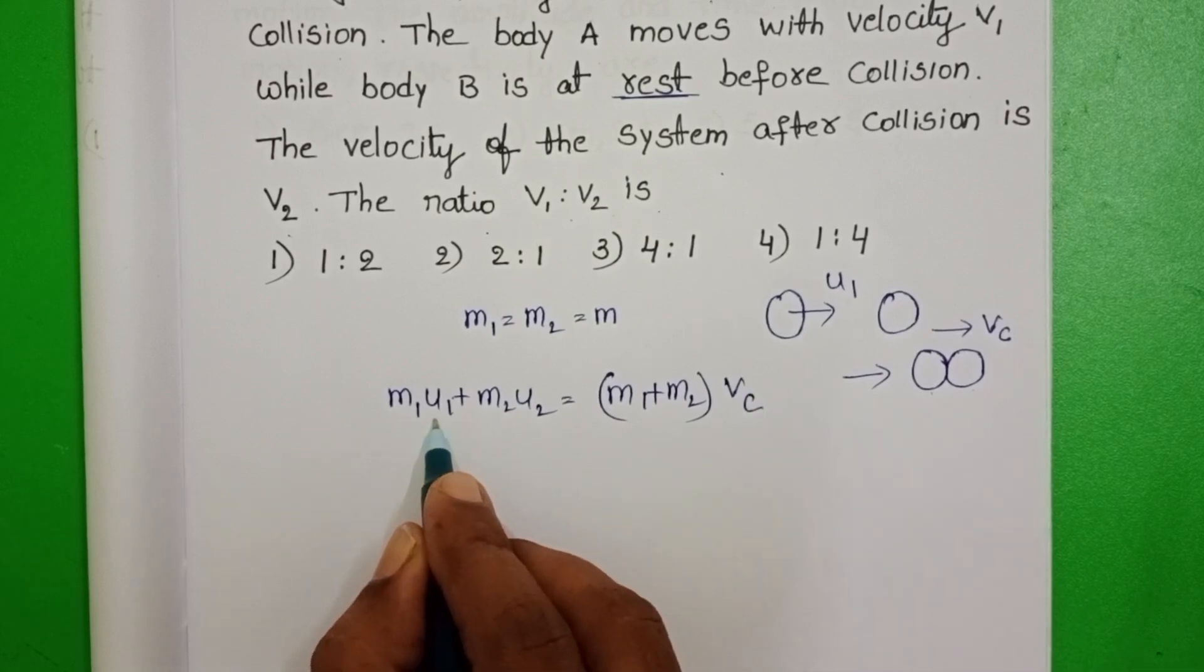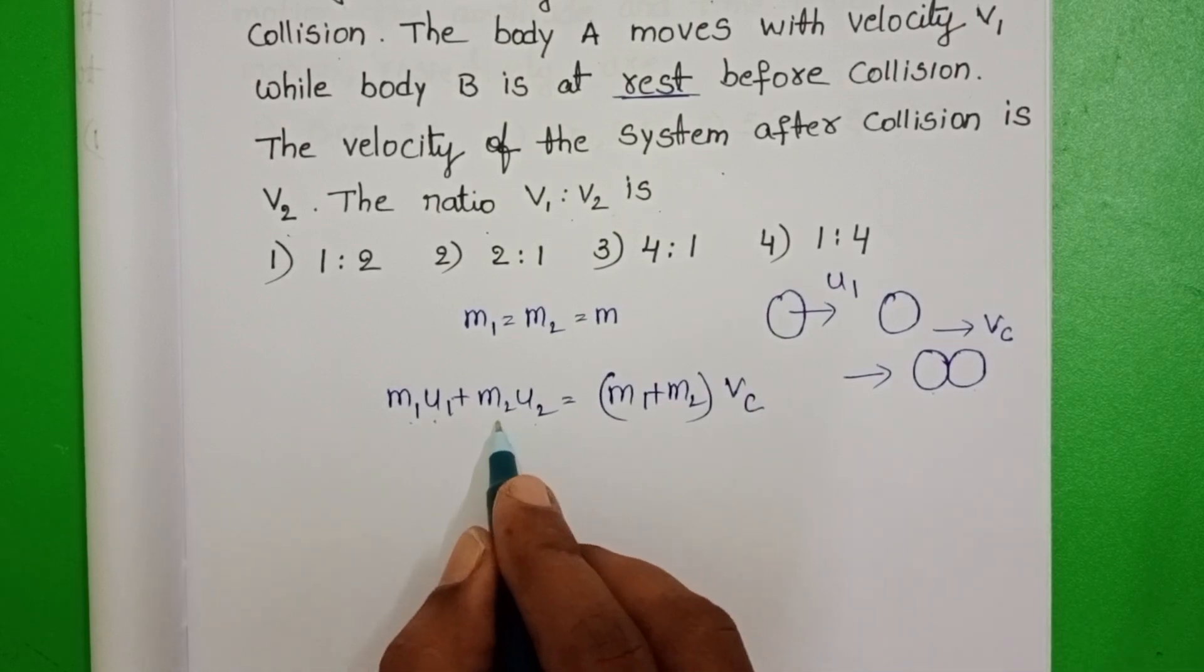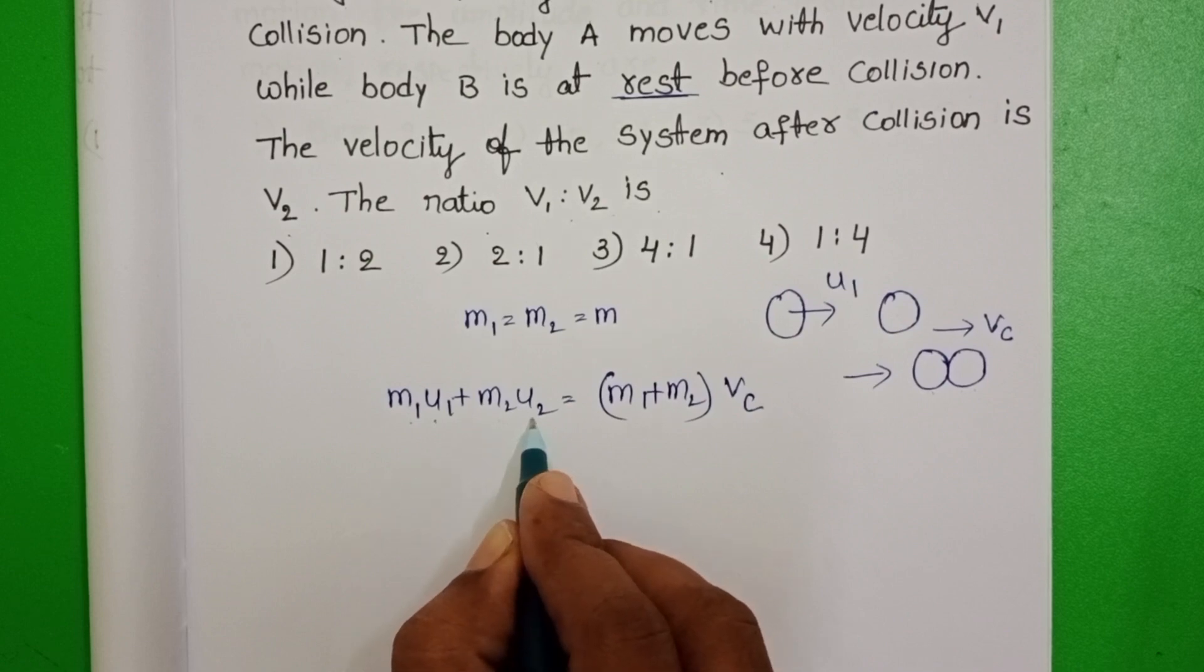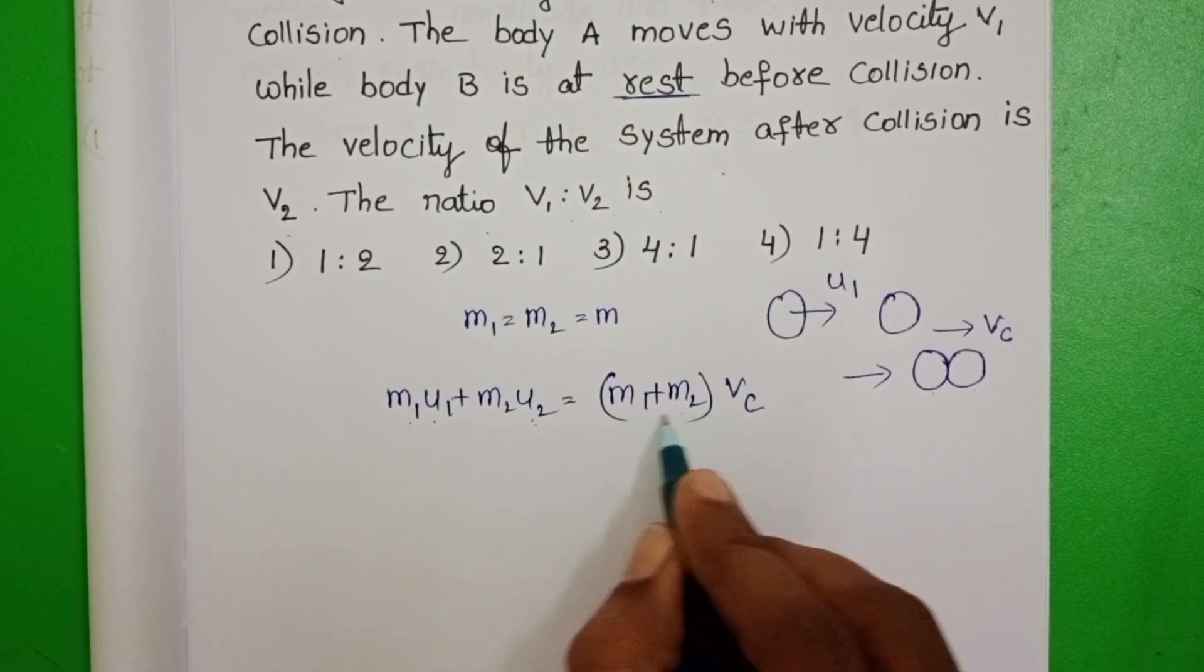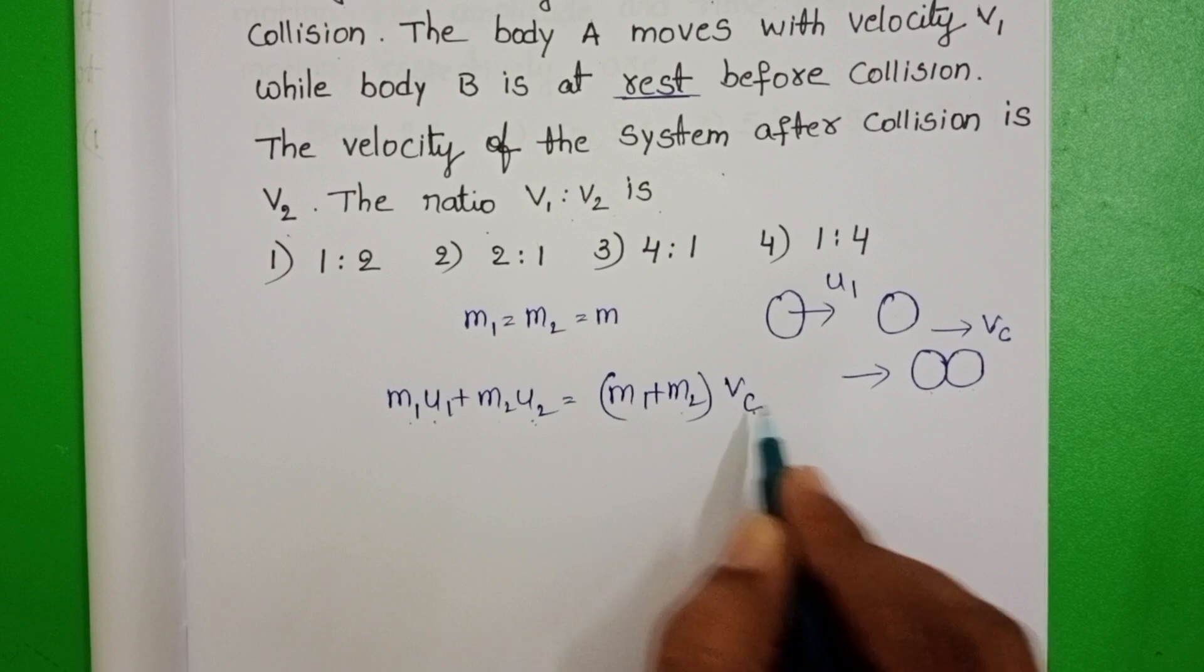Where U1 is the initial velocity of the first body and U2 is initial velocity of the second body. And after collision, these two bodies are moving with the common velocity.